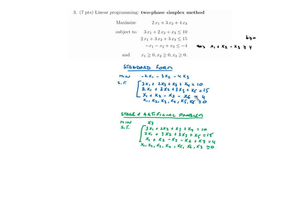Looking at this standard form, it is difficult to find a basic feasible solution to start from. We can identify pivot variables x4 and x5 — they appear only once in an equation and have a positive coefficient. But for the third equation it is not possible to find a pivot variable.